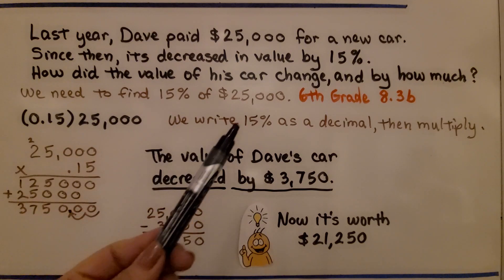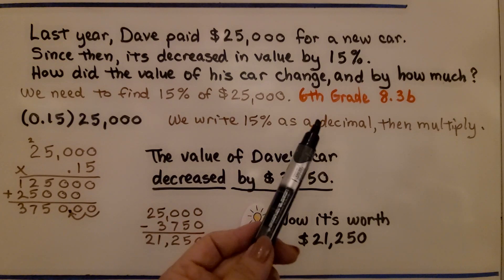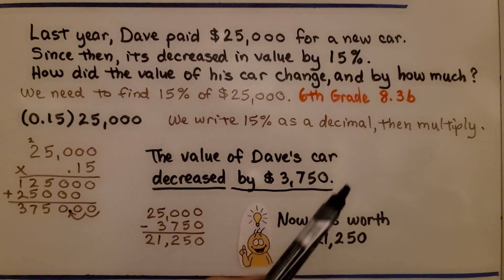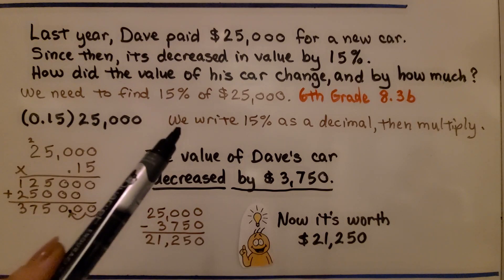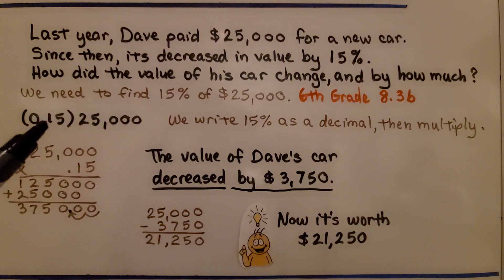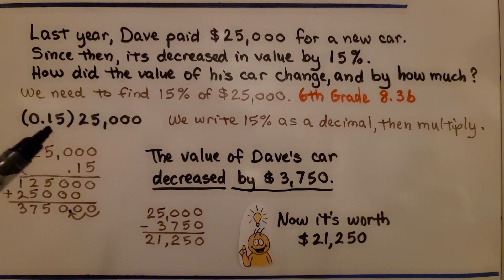If you don't remember how to do that, we're going to walk through it, but that was 6th grade math, 8.3b, and it will be linked in the description if you need a real quick refresher. So, what we're going to do is, we're going to write 15% as a decimal and then multiply. So, 15%, we take off that percentage sign, and we put a decimal point, 1, 2 hops over. So, that the 5 is in the hundredths place. So, this is 15% in decimal form.